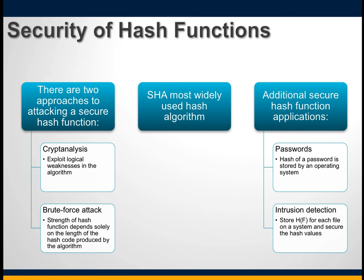As with symmetric encryption, there are two approaches to attacking a secure hash function: cryptanalysis and brute force. Cryptanalysis of hash functions involves exploiting logical weaknesses in the algorithm. The strength of a hash function against brute force attacks depends solely on the length of the hash code produced. For a hash code of length n, the level of effort required is proportional to the pre-image resistance, second pre-image resistance, and collision resistance as described earlier.